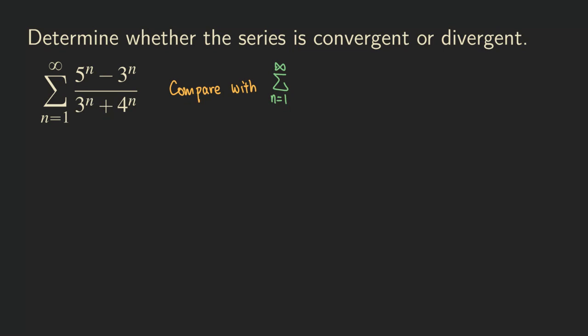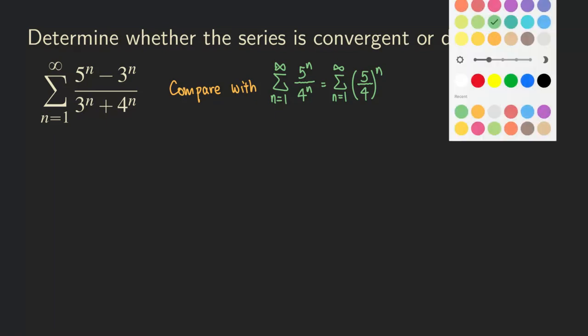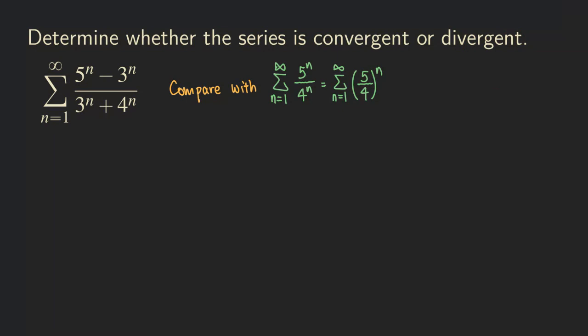So in this case, we are going to compare the original problem with phi to the n over 4 to the n. And that's a geometric series, because if you rewrite it in the form of phi over 4 raised to the n power, then we know that's a geometric series with the common ratio r equals phi over 4. This series is divergent.